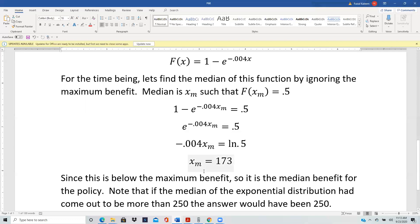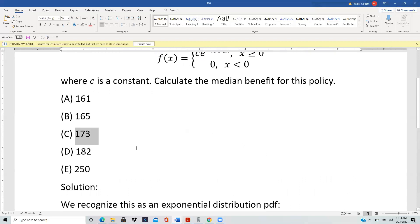And that applies not only just to the median, but to any other percentile that we deal with. So 173 is choice C.